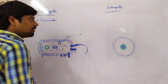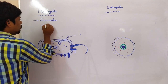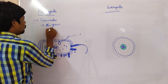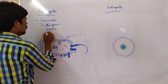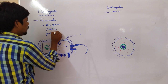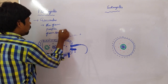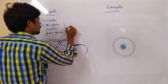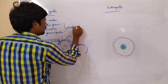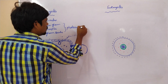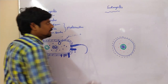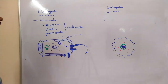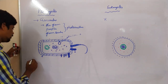Another difference: gas vacuoles, which are present in blue-green and purple-green bacteria. All these are involved in photosynthesis. Gas vacuoles are not present in eukaryotic cells.